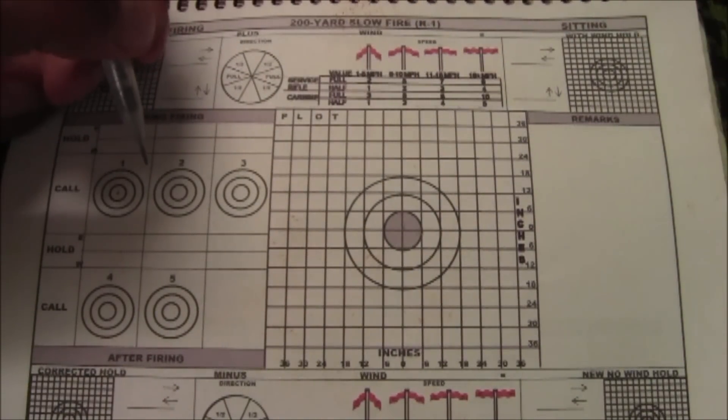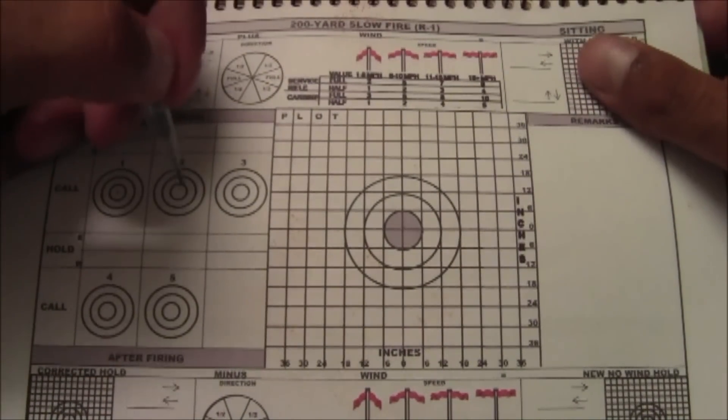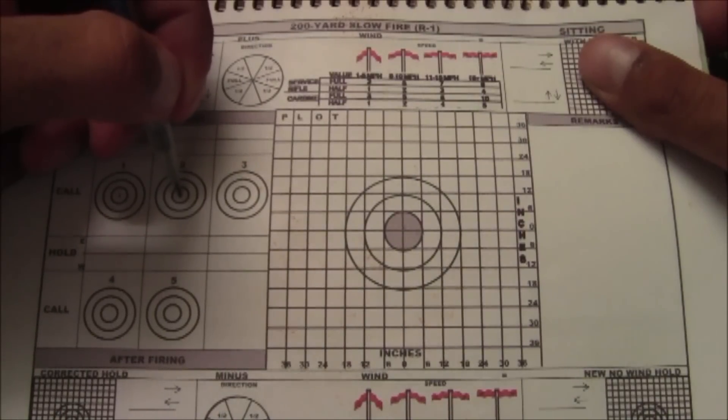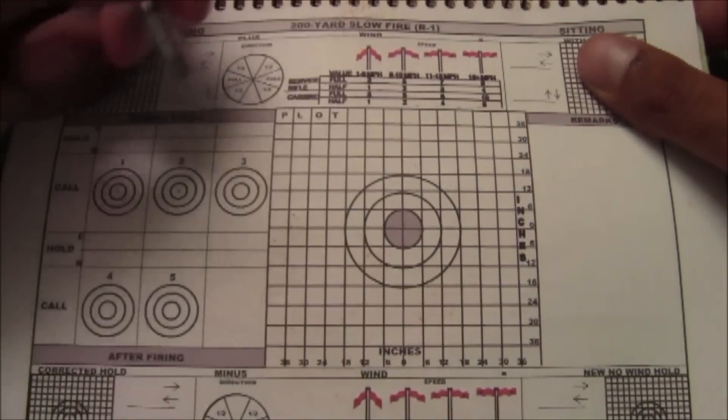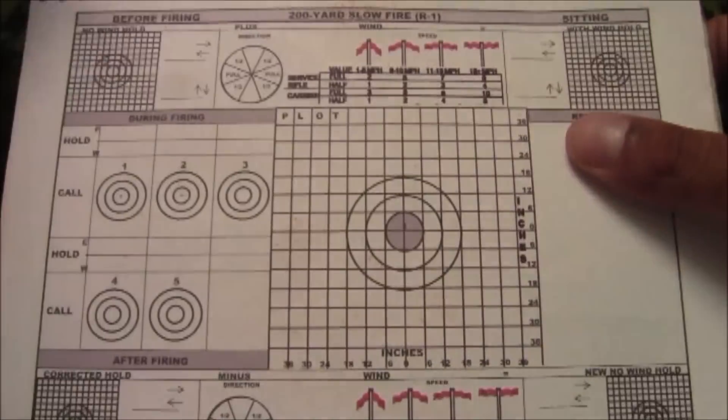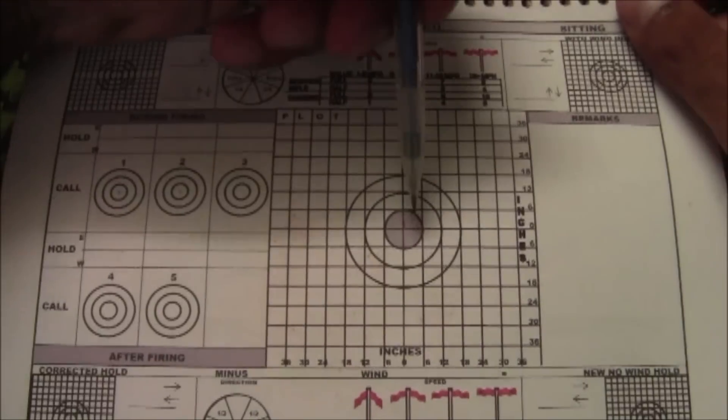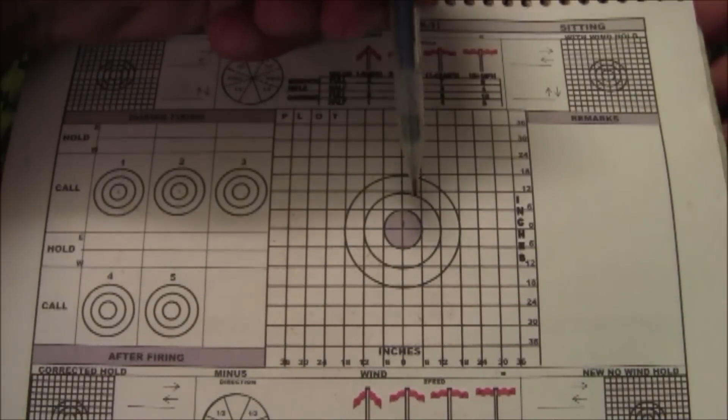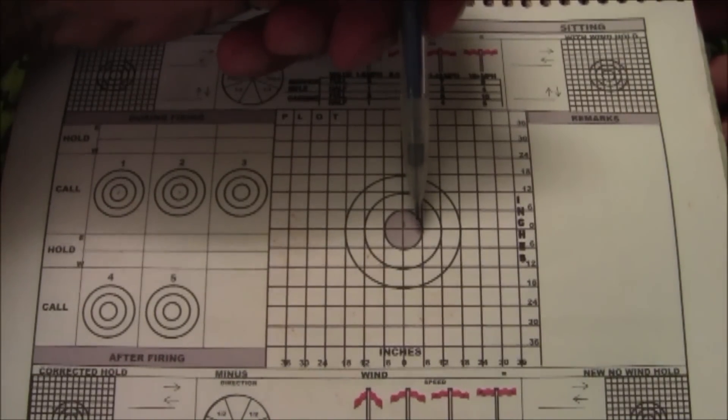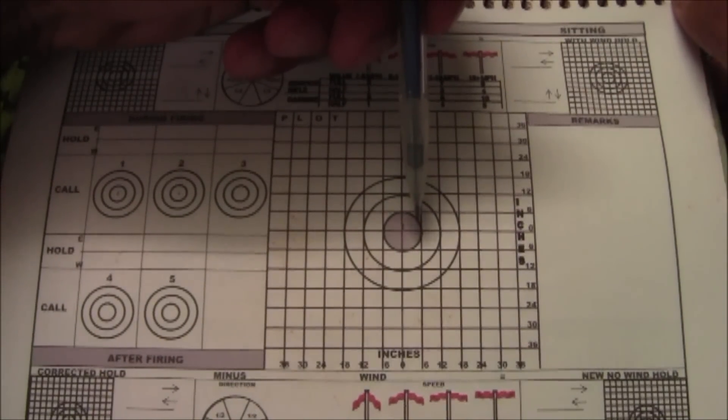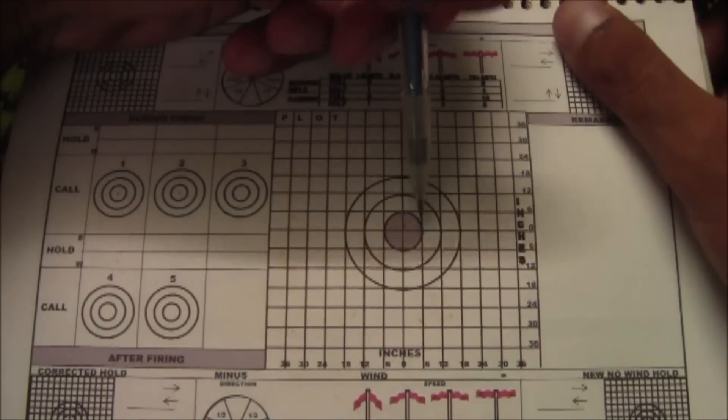I shoot again, follow through, they pull the target down. So when they pull the target down, I'm going to mark my second shot, or call my second shot, and then mark my first shot. Alright, now let's say the target board comes back up, and my shot was over here. Now let's say the wind changed. Now that my shot was over here, I'm going to remember that and adjust for it on my third.